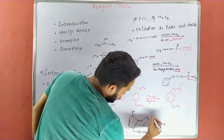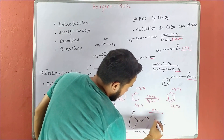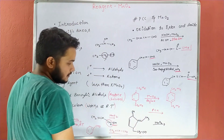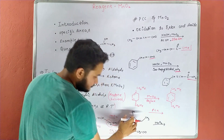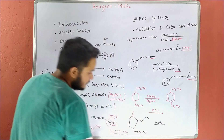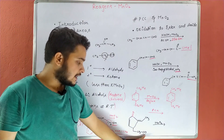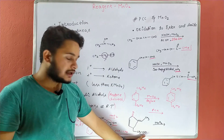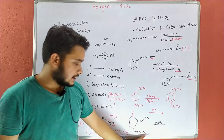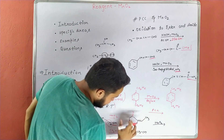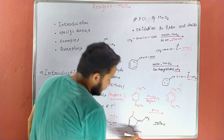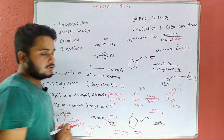Let's suppose मेरे पास PCC भी है और MnO2 भी है। अगर मैं MnO2 के साथ reaction कराऊंगा — this is our allylic alcohol — तो वो सिर्फ इसको convert कर देगा aldehyde में। यह allylic नहीं है और benzylic भी नहीं है, तो MnO2 उस alcohol को oxidize नहीं करेगा। अगर PCC का case हो, तो PCC इसको भी oxidize कर देगा — यहाँ aldehyde और यहाँ ketone बना देगा।